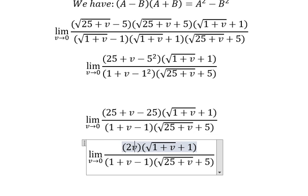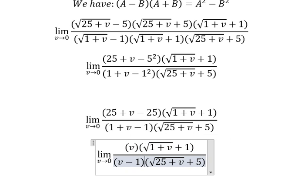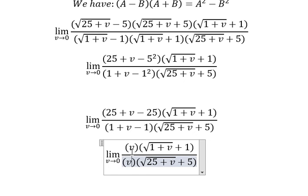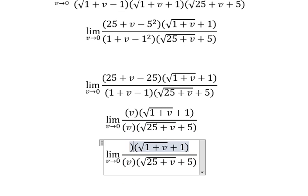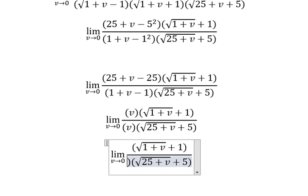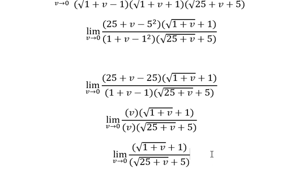So v divided by v, they cancel each other. Next, we put v approaches 0 here and here, so we can get the final answer.